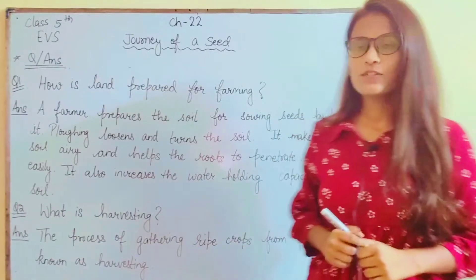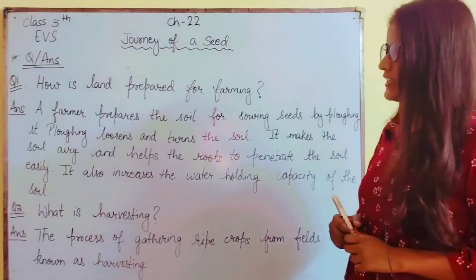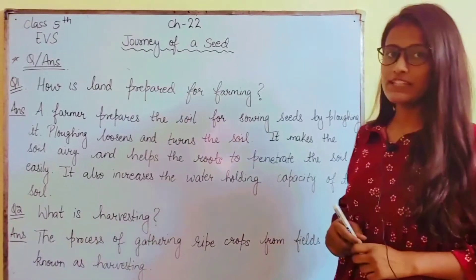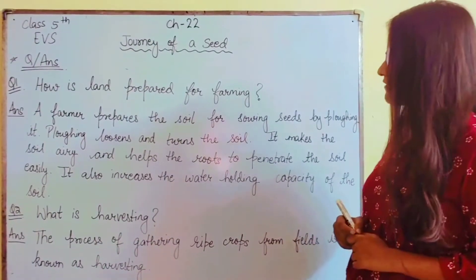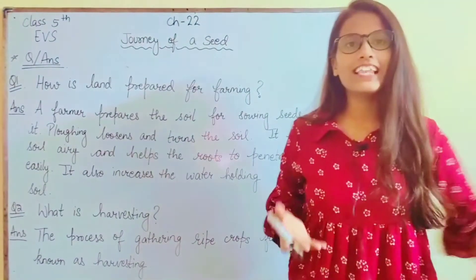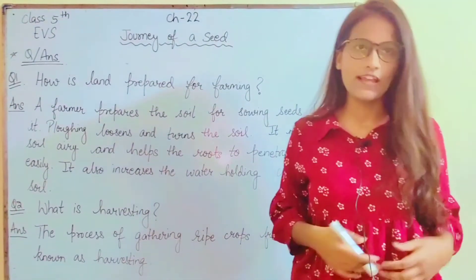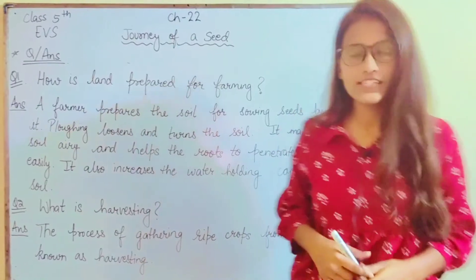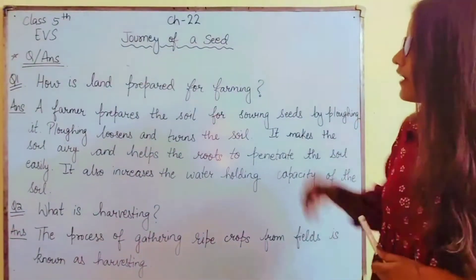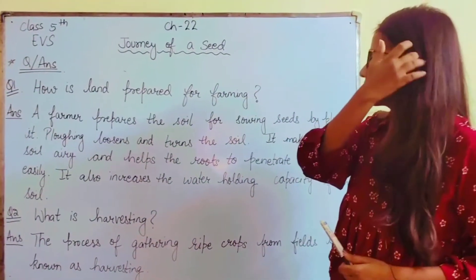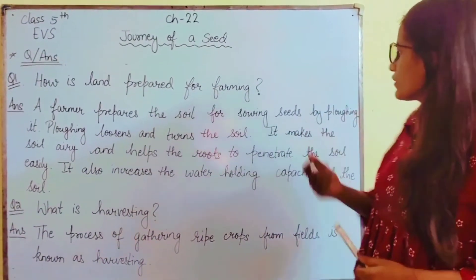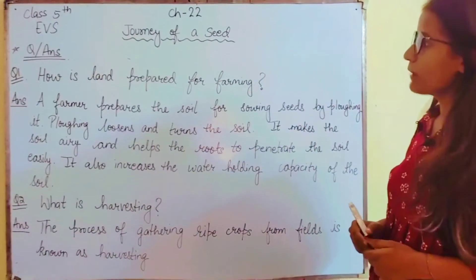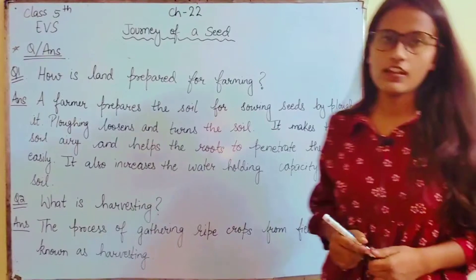So the first question is: how is land prepared for farming? Farming ke liye land kaise prepare karte hai? The answer is: a farmer prepares the soil for sowing seeds by plowing it.